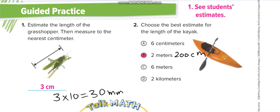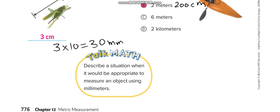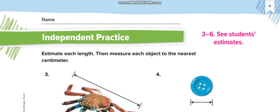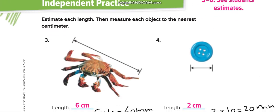Here they want you to estimate the length of this cake. The best estimate is two meters — six centimeters would be very small, six meters very big, and two kilometers is huge. So two meters is the best estimate. Converting to centimeters: one meter equals 100 centimeters, so two meters equals 200 centimeters.